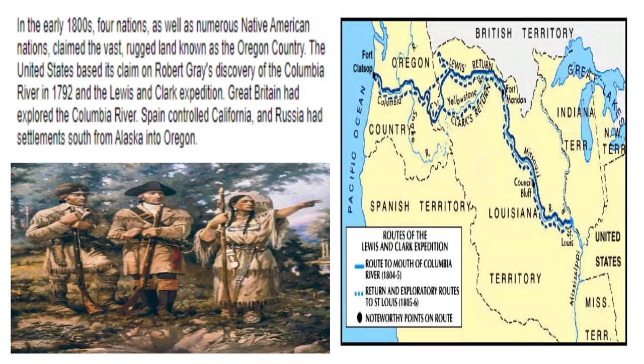In the early 1800s, four nations, as well as numerous Native American nations, claimed the vast rugged land known as the Oregon Country. The United States based its claim on Robert Gray's discovery of the Columbia River in 1792 and the Lewis and Clark Expedition. Great Britain had explored the Columbia River. Spain controlled California, and Russia had settlements south from Alaska into Oregon.